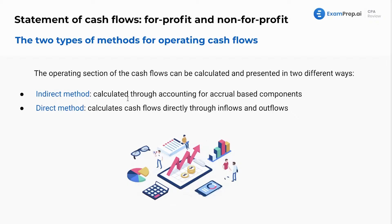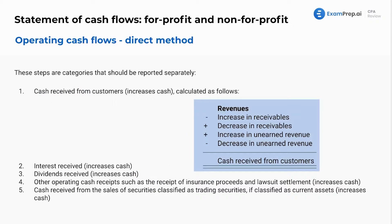The indirect method is calculated through accounting for accrual-based components. The direct method is directly through inflows and outflows. I like the direct method — it's pretty straightforward. The direct method is a lot of times going to be using our balance sheet accounts, and this is a common format for questions, because when we net it together the increase and decrease in receivables.